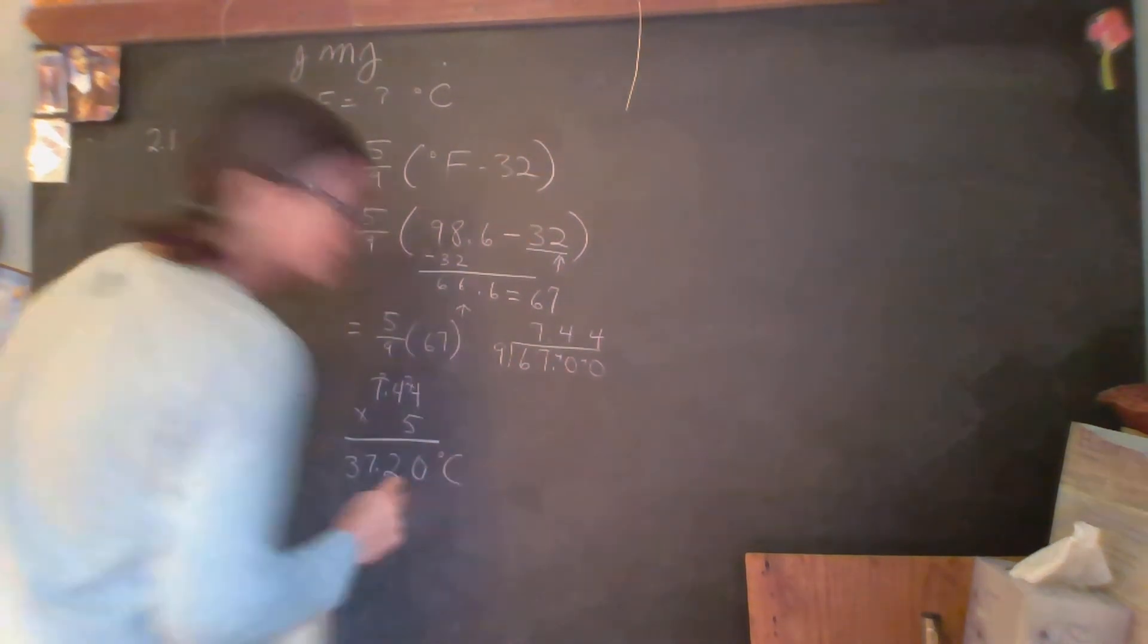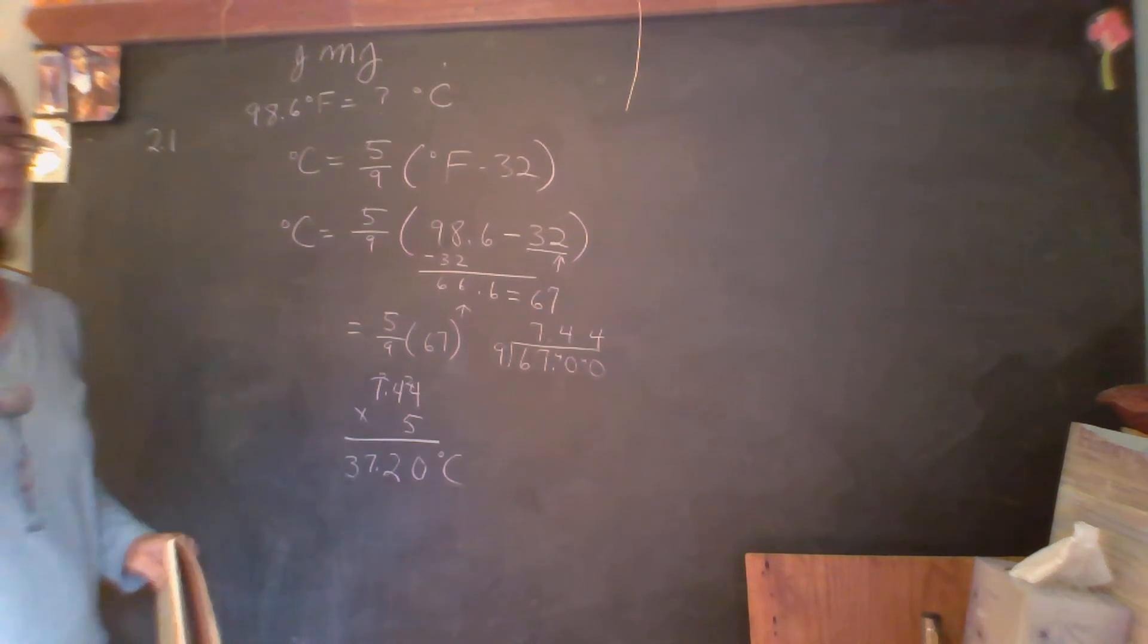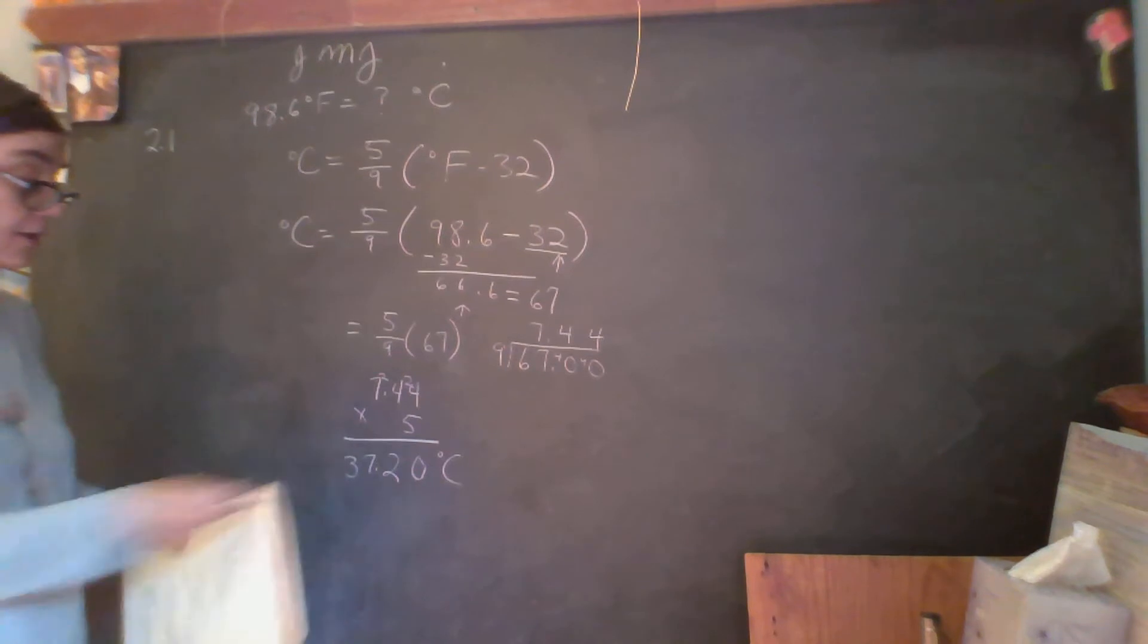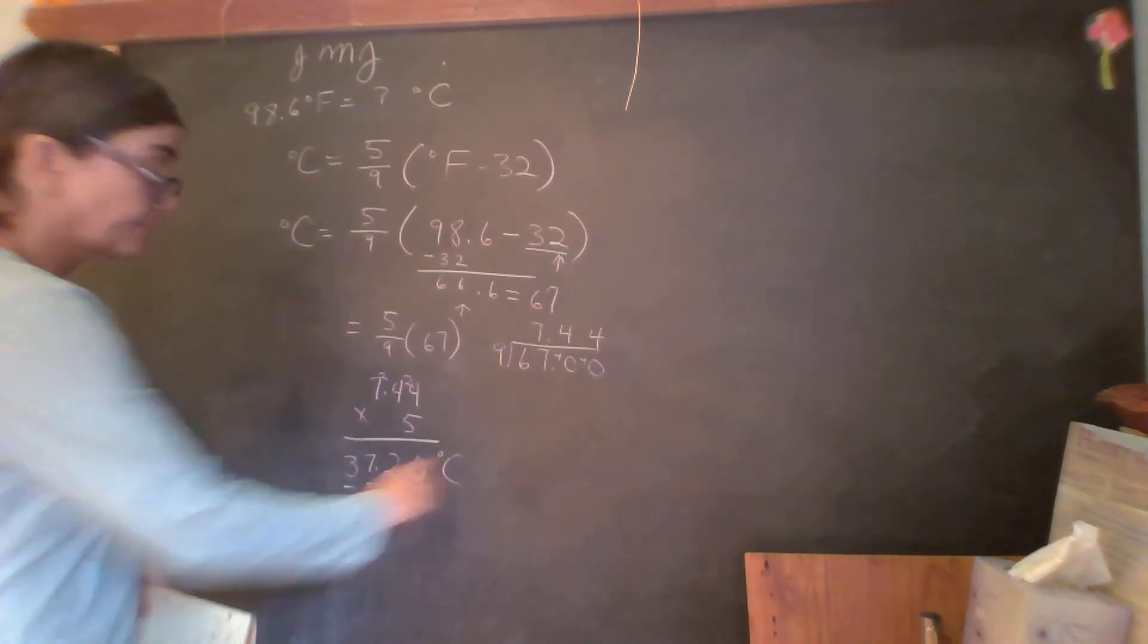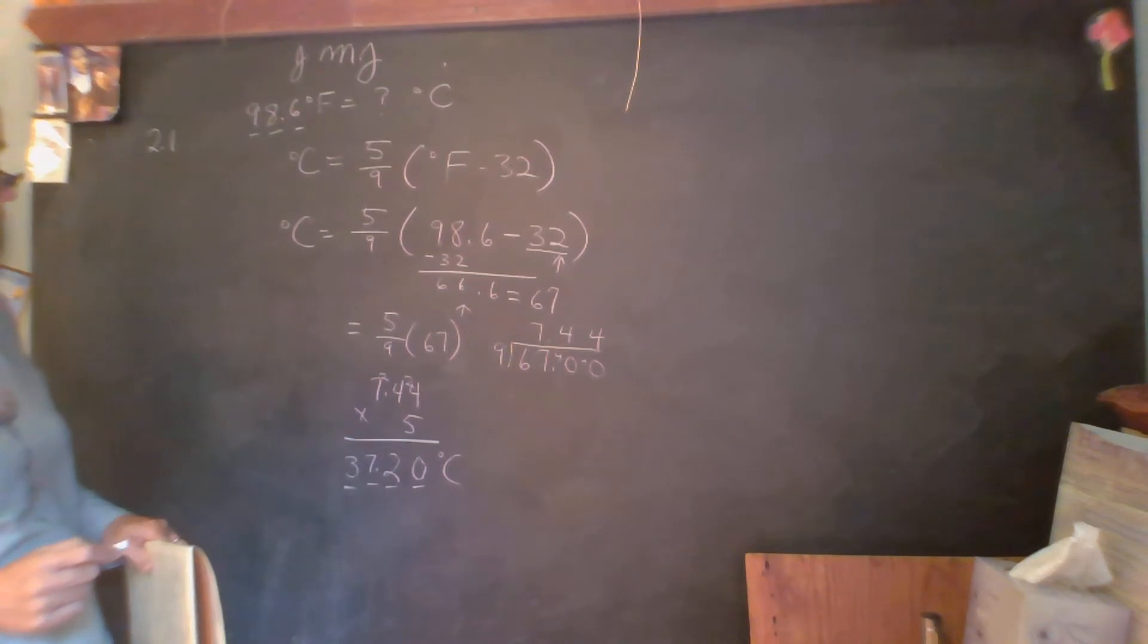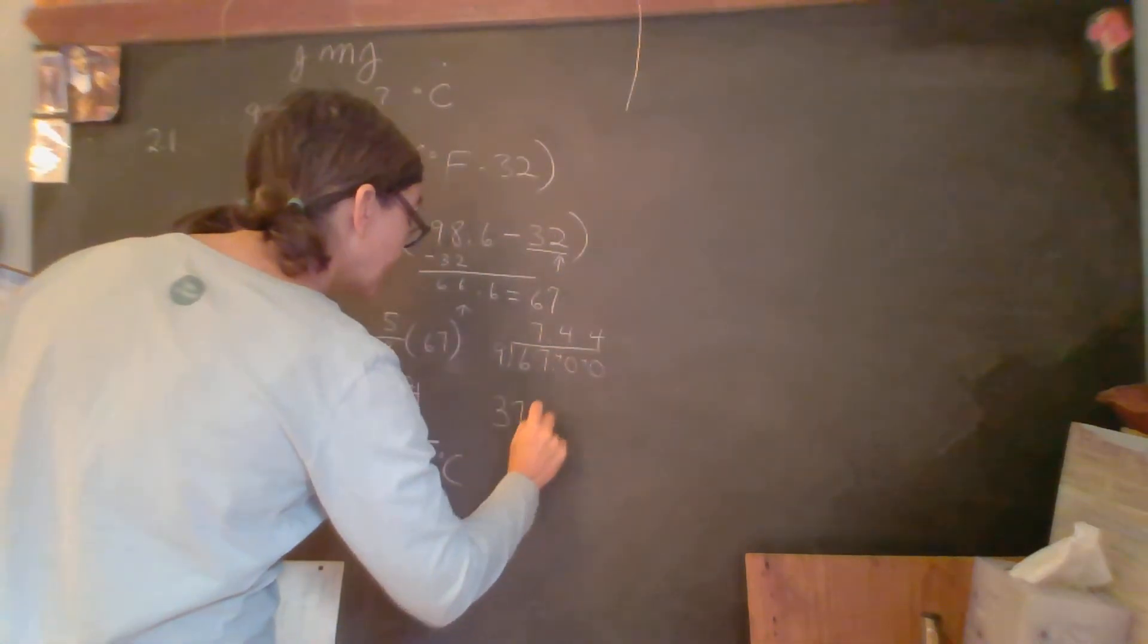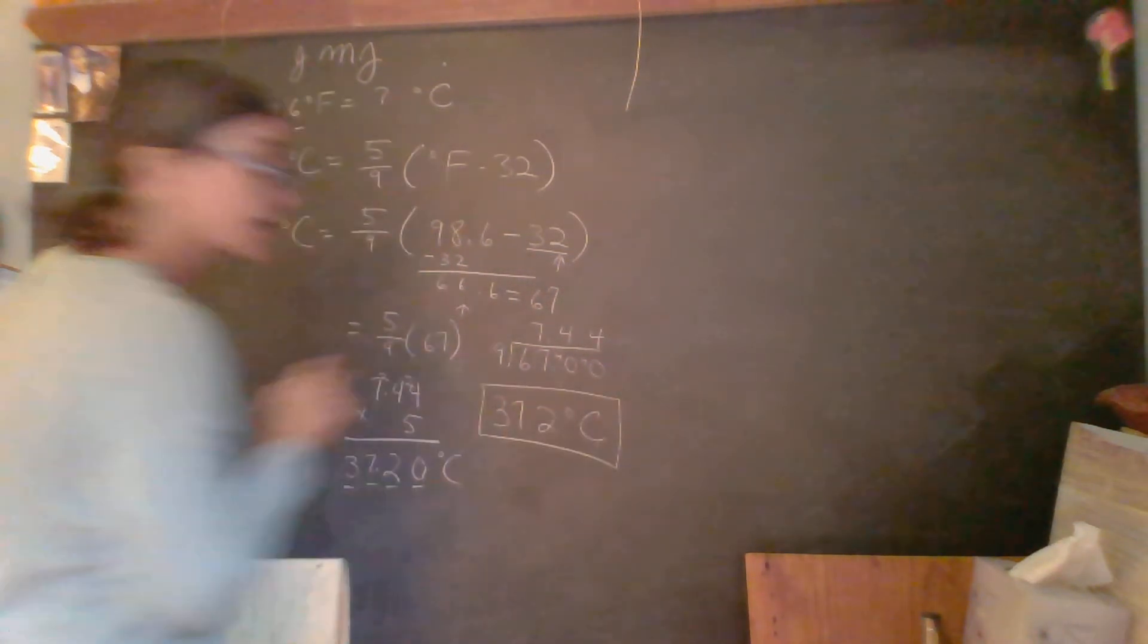Now this is not the answer I'm going to report because it has too many significant digits. It has 4, but I want to have 3. So I'm going to report my answer as 37.2 degrees Celsius.